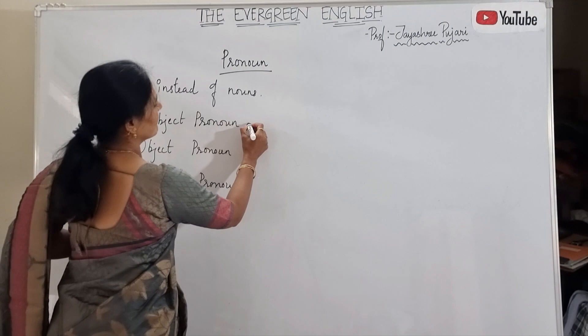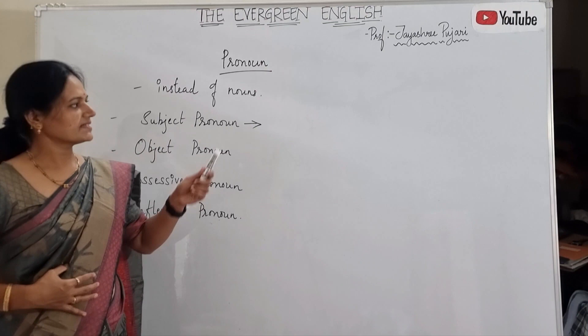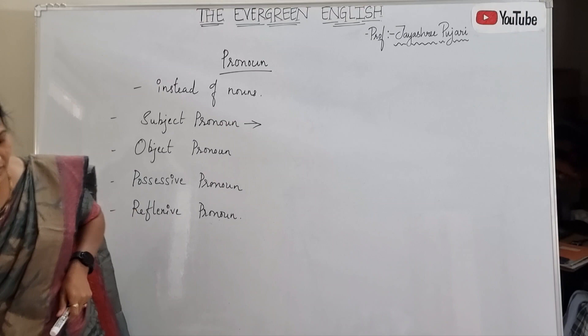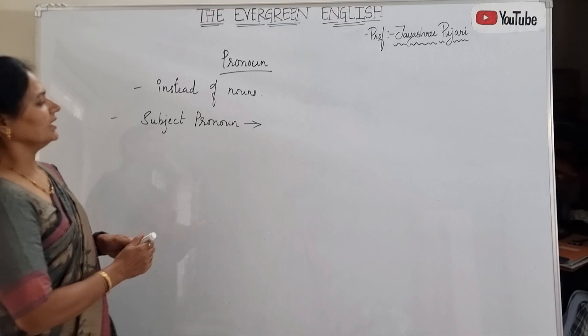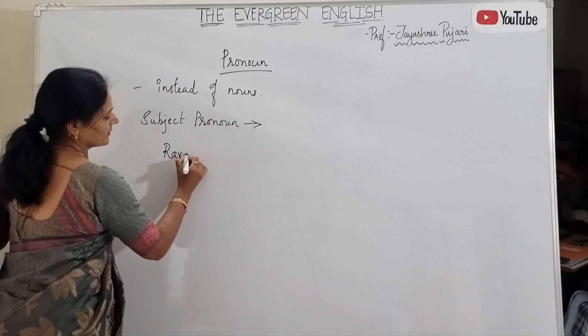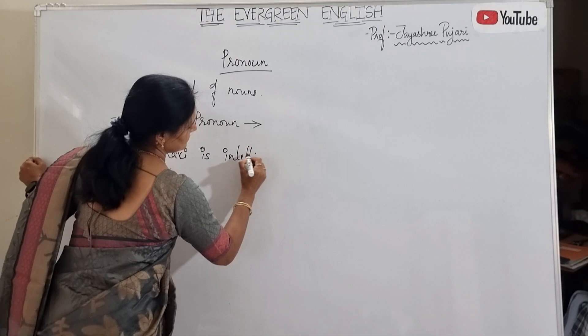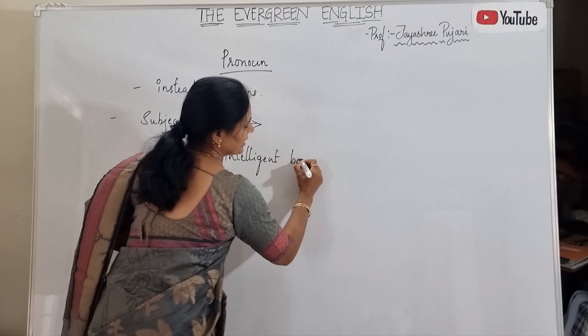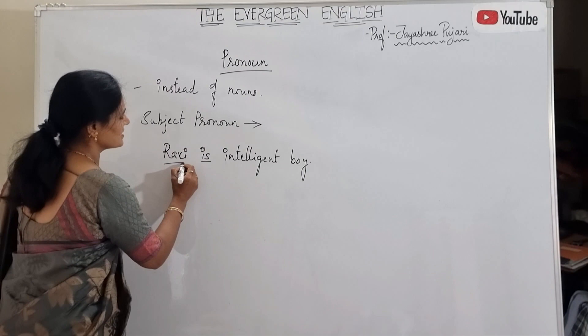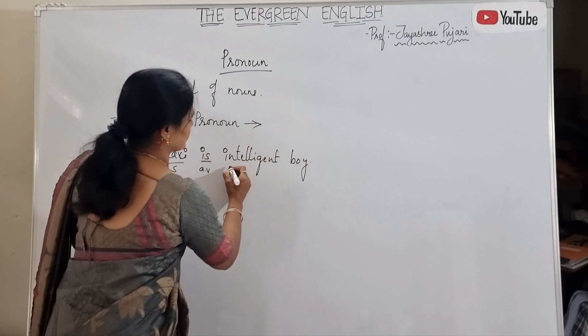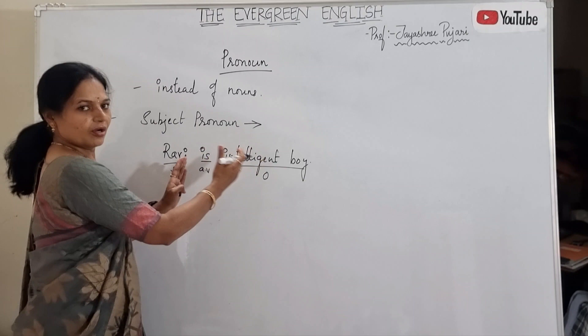So, what is a subject pronoun? Pronouns are words which are used instead of nouns. When we talk about subject pronouns, 'subject' relates to when we frame an English sentence. For example, if I write: 'Ravi is an intelligent boy.' This is a sentence. It has a subject, a helping verb or auxiliary verb, and an object. An English sentence has subject and predicate, or we divide it into subject, verb, and object.